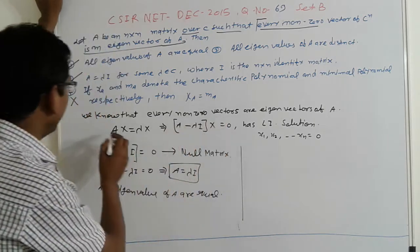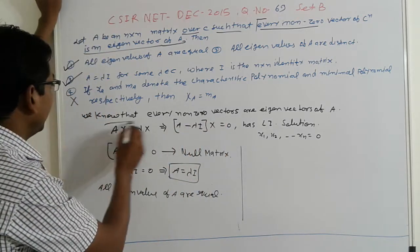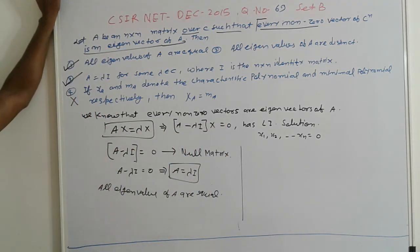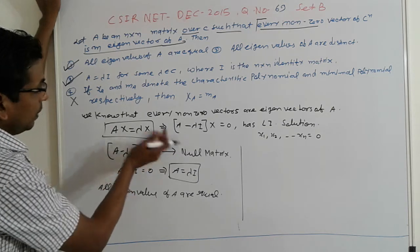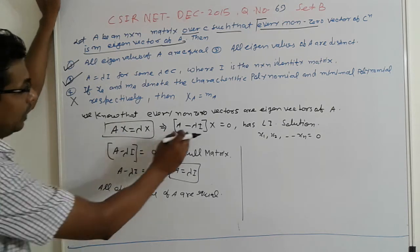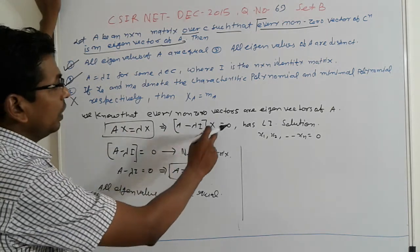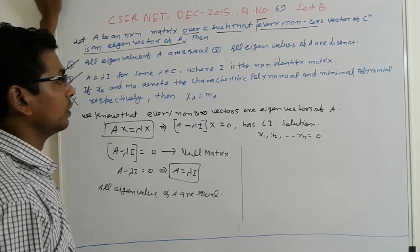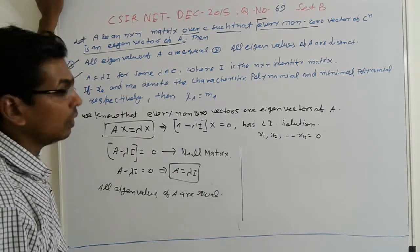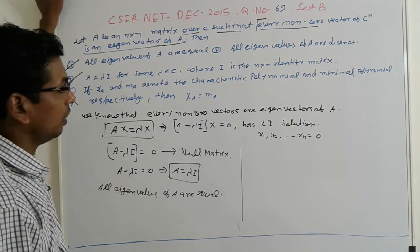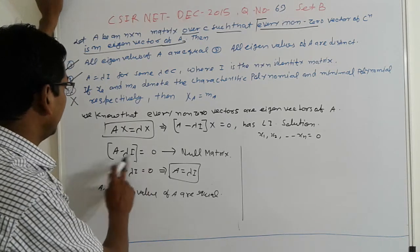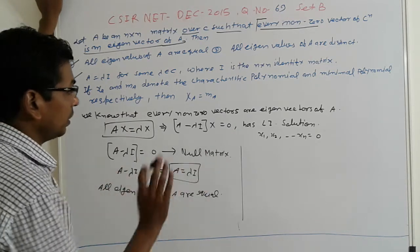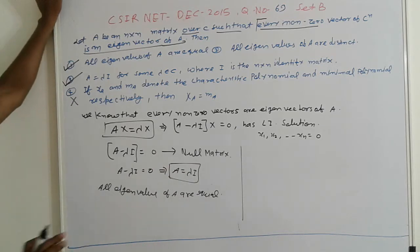So, transferring terms: A minus λ times X equals zero. Taking (A − λI)X = 0, this has n linearly independent solutions X1, X2, up to Xn. It means A minus λI equals the null matrix, i.e., A = λI.